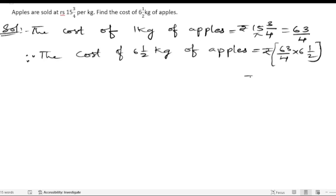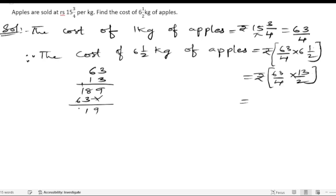So we will get rupees. First we will convert this 63 by 4 into 6 times 2 is 12, 12 plus 1 is 13 by 2. So here 63 into 13: 3 threes are 9, 3 sixes are 18, 1 three is 3, 1 six is 6. So we got 9, 8 plus 3 is 11, 6, 7, 8. So 819 by 4 times 2 is 8.